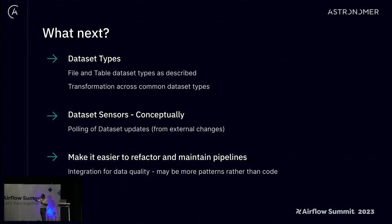Part of the reason for holding off on that first part is that we need concrete types to be able to say, hey, what actually is an S3 file — and therefore to be able to lead to that polling. That's the logical reason why we want to propose that sequence of changes.